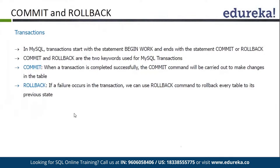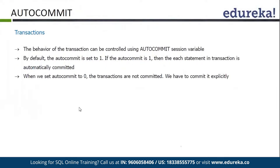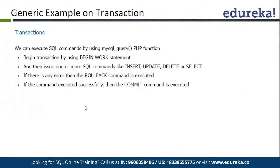The behavior of a transaction can be controlled by auto commit. Auto commit is by default 1. If auto commit is 1, then all transaction statements are committed automatically — we don't have to use the commit command at the end. When it is 0, we have to provide the COMMIT clause at the end of the transaction to commit all the queries.